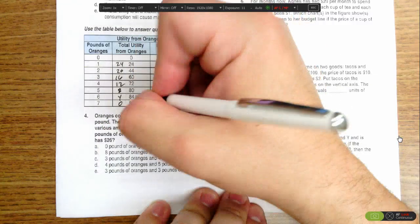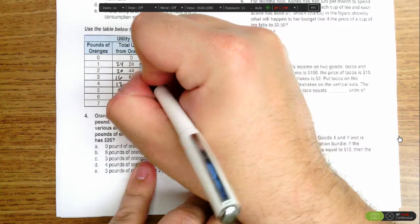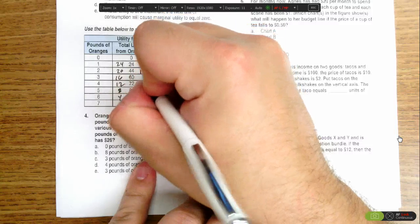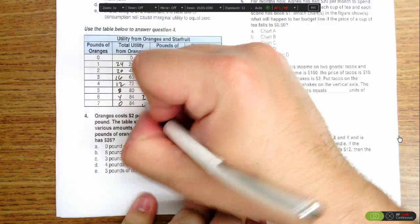Each orange costs $2. So the marginal utility per dollar spent here is 12 for the first, 10 for the second, 8 for the third, 6, 4, 2, and 0.